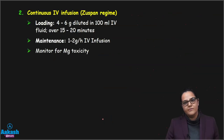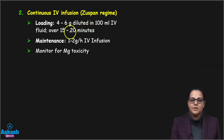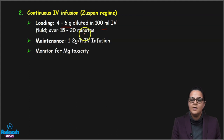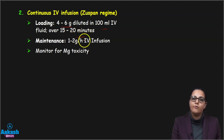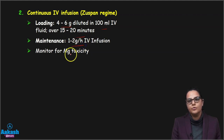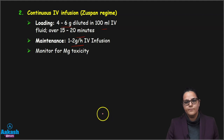The second is the Zuspan regimen — continuous IV infusion. Give a loading dose of 4 to 6 grams diluted in 100 ml of intravenous fluid over 15 to 20 minutes, followed by a maintenance dose of 1 to 2 grams per hour as an IV infusion.